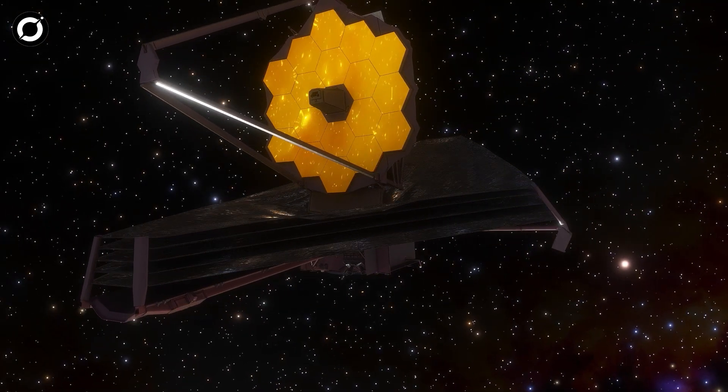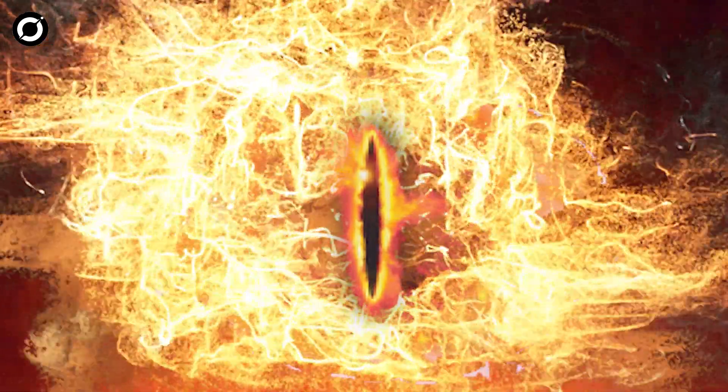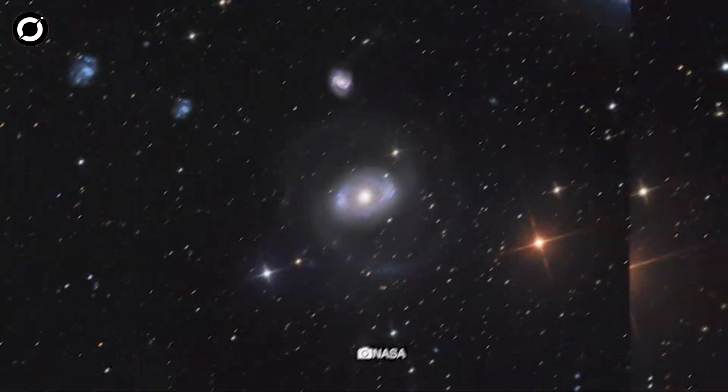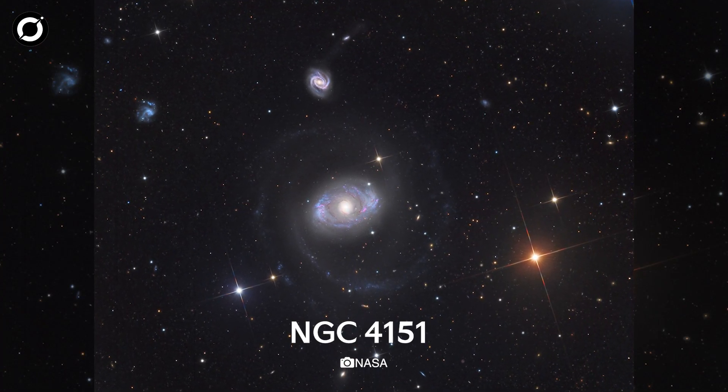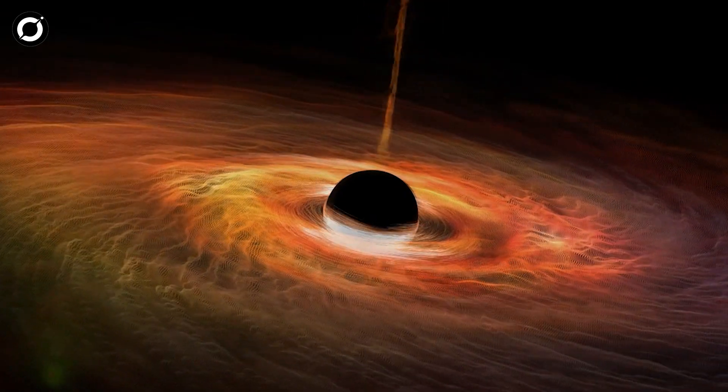So, when I said that the James Webb Space Telescope was going to look into the Eye of Sauron, I didn't exactly mean the iconic malevolent presence from the Lord of the Rings trilogy. This Eye of Sauron is actually a spiral galaxy called NGC 4151, with a supermassive black hole at its center.